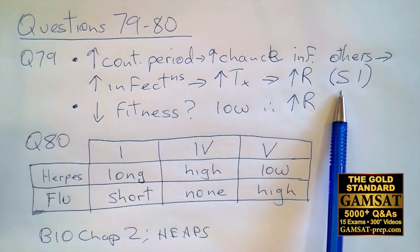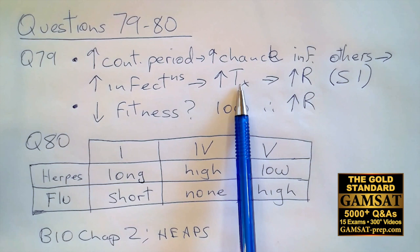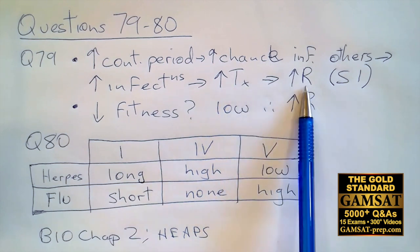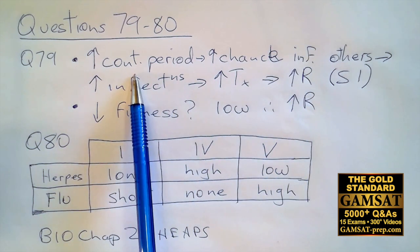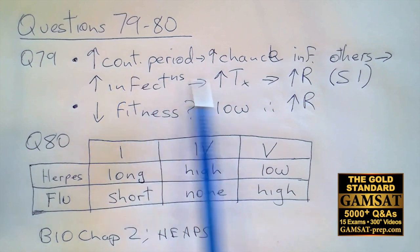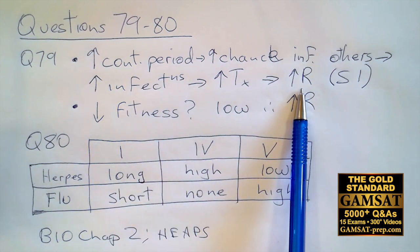Sentence number one said the resistance of pathogenic microorganisms to antimicrobial drugs is common. So if you're treating more people with these antimicrobial drugs or antibiotics, then you're going to have more resistance. So we know that for the contagious period, which is Roman numeral one, it should be long to result in increased resistance.